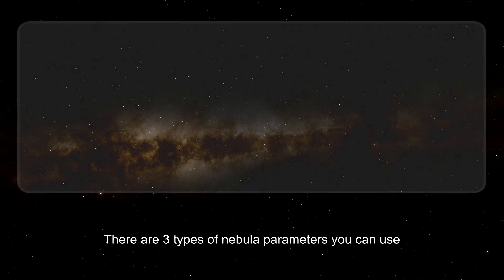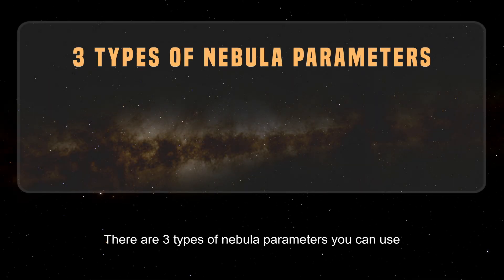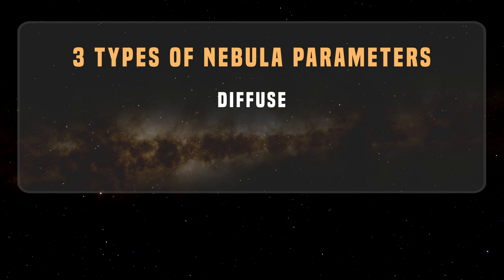There are three types of nebula parameters you can use: Diffuse, Planetary, and SNR — or supernova remnant.